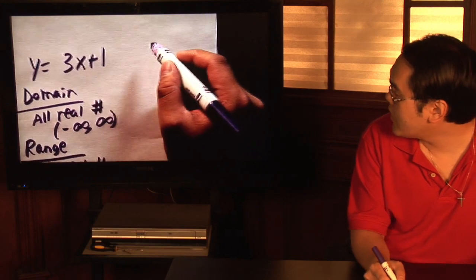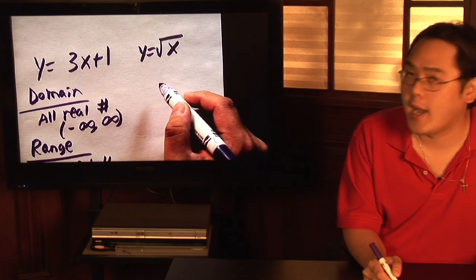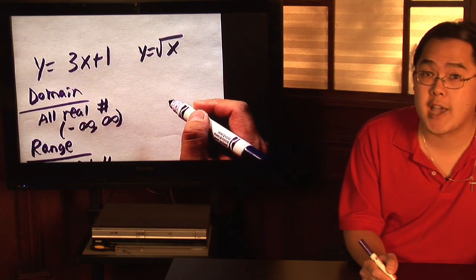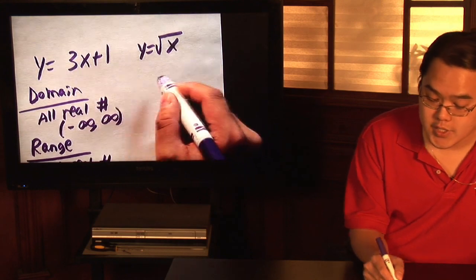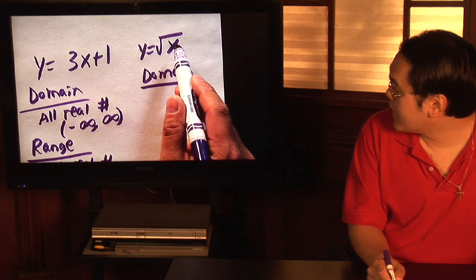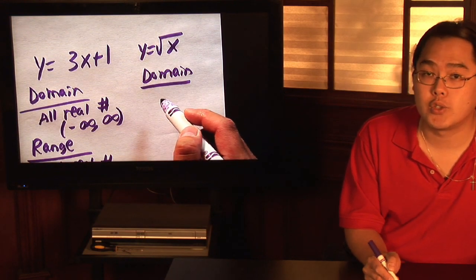Suppose you have something of the sort y is equal to square root of x. In this particular case, you have a square root function. Square root functions have to be positive or zero. So that means for the domain, you can plug in only numbers bigger than or equal to zero.